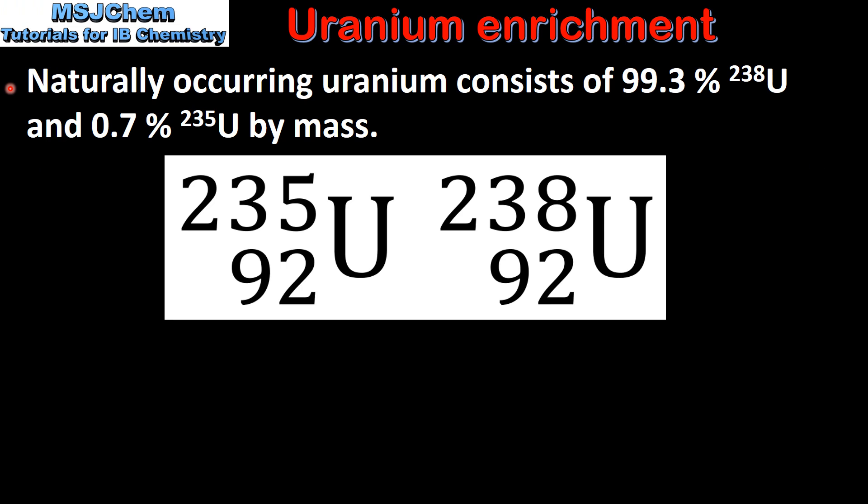Naturally occurring uranium consists of 99.3% uranium-238 and 0.7% uranium-235 by mass. So here we have the symbols for the two isotopes of uranium.